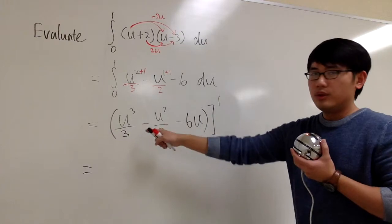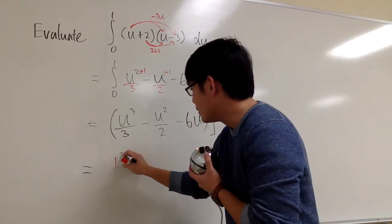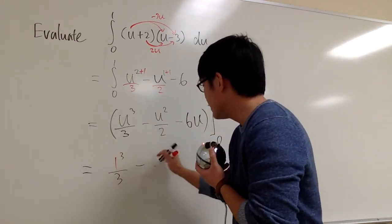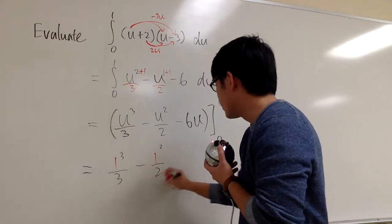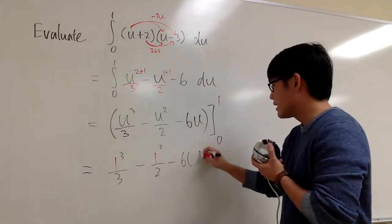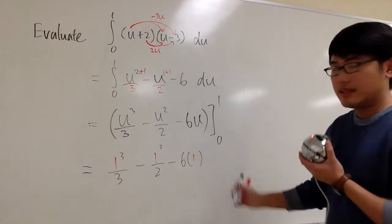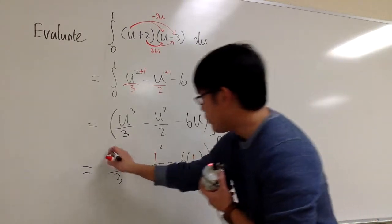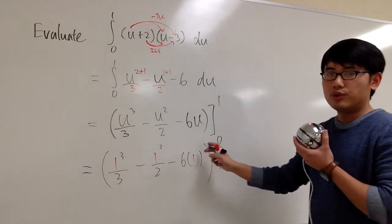Plugging 1 into all the u's. So we are going to get 1 to the third power over 3, minus 1 squared over 2, minus 6 times 1, like this. And this is like the first part, after we plug in 1 into all the u's.